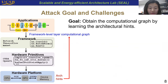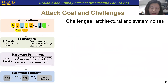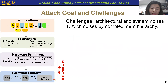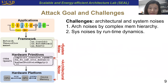It's very challenging to achieve the goal of reversing the computational graph based on architecture hints, because of the existence of both architecture and system noises. First, most memory requests are filtered in the complex memory hierarchy in the GPU platform, so we can only obtain a very small proportion of complete memory traces. The second reason is that runtime dynamics bring system noises into the architecture hints.